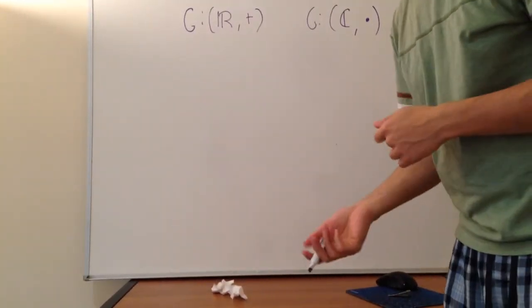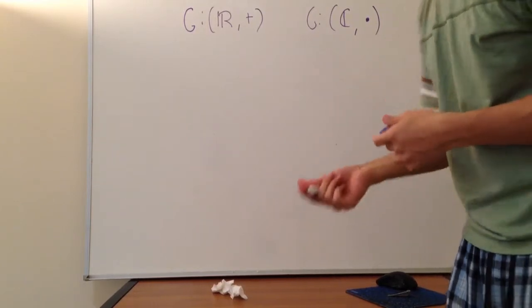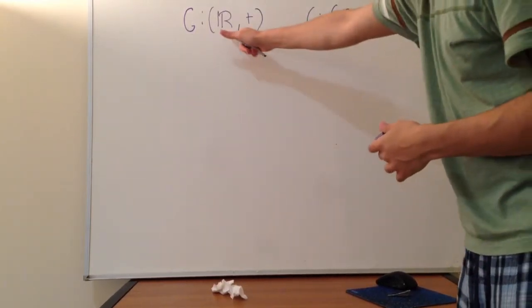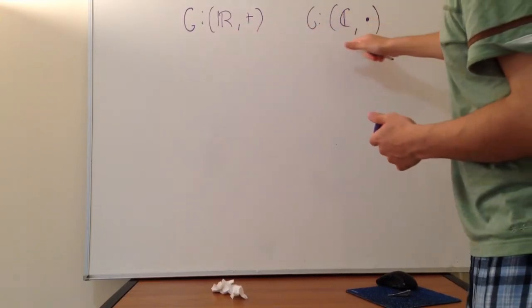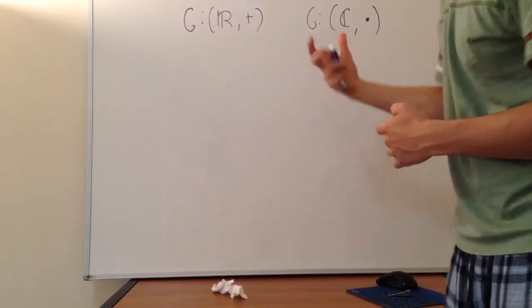Alright, so this is my second video on my abstract algebra playlist. Today I'm going to be proving some examples of groups. The first group I have are the reals under addition, and the second group are the complex numbers under multiplication.